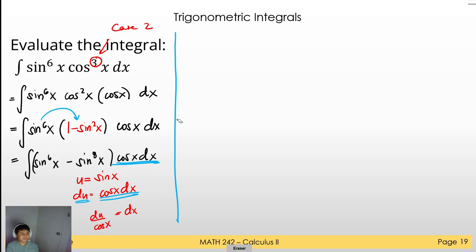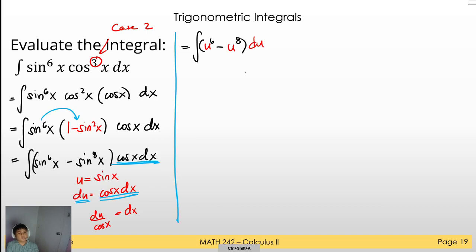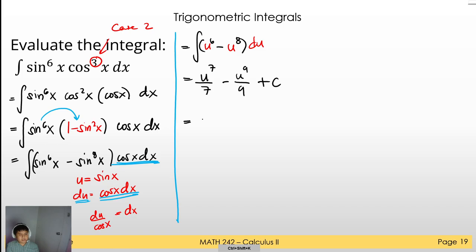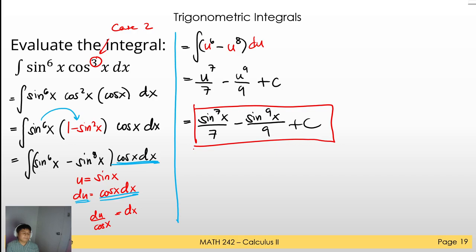Since du = cosx dx, we substitute directly: ∫(u⁶ − u⁸) du. Applying the power rule: u⁷/7 − u⁹/9 + C. Substituting back u = sinx gives the final answer: sin⁷x/7 − sin⁹x/9 + C.